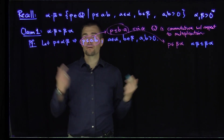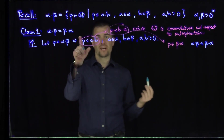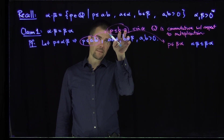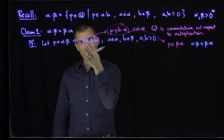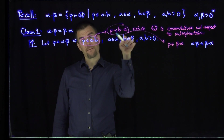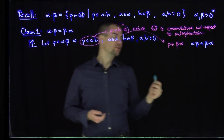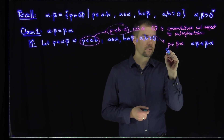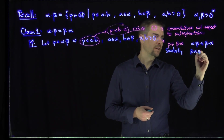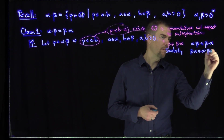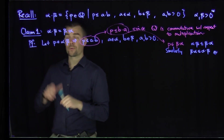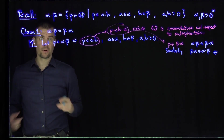We can easily see by reversing the chain of this logic that if I start with the condition b·a, I can just flip b and a again and conclude that if we're in β·α, we're also in α·β. So similarly, β·α is contained in α·β. And then we get the fact that multiplication is commutative — the real multiplication on real numbers is a commutative operation.